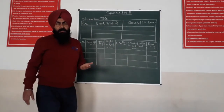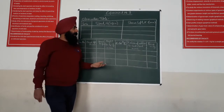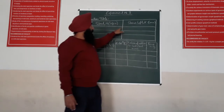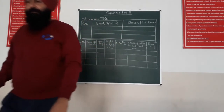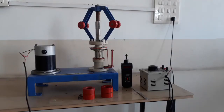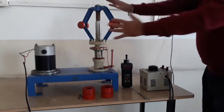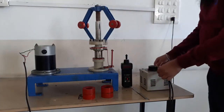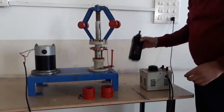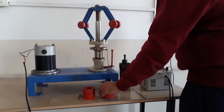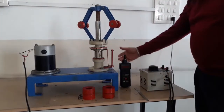Now we come to the experimental setup and perform the experiment. We are taking two readings: speed of the governor and sleeve displacement. This is the universal governor apparatus. This is the DC motor speed control device. This is the tachometer. These are the weights for the Porter governor. This is the steel rule for measuring the sleeve lift.